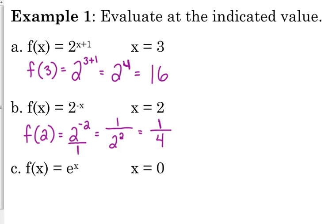And then an e to the x example. f of x is e to the x, and the x value is 0. So e to the 0 is 1. If none of your math teachers have ever told you that any number to the 0 power is 1, then I'm sorry, but I'm telling you now. Any number to the 0 power is 1, always.